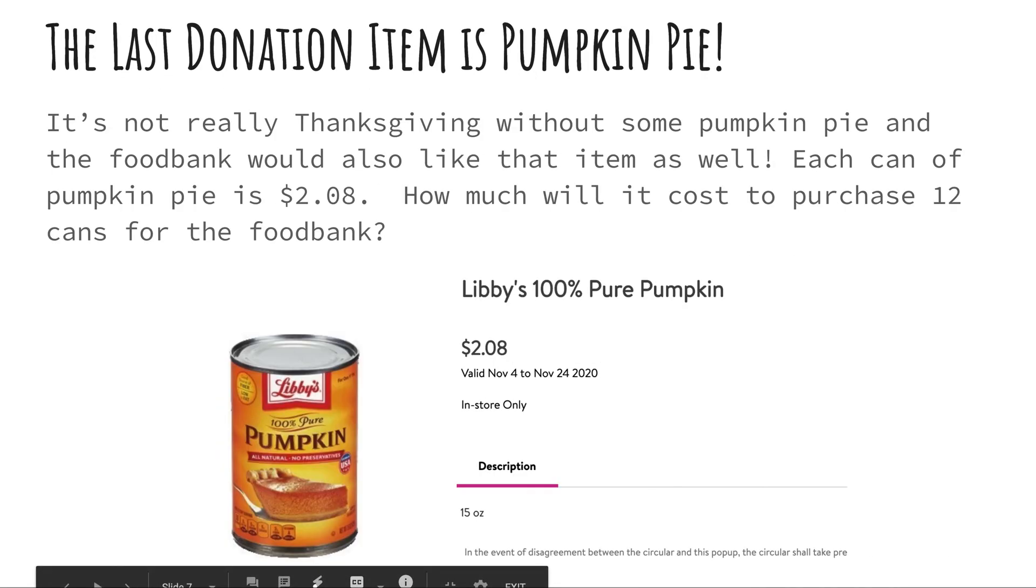All right. Now we're going to move on to our last donation item. And this time it's going to be pumpkin pie. Again, it is not Thanksgiving to me without some pumpkin pie. I love pumpkin pie. Okay, especially with some Cool Whip on top, right? Now notice each can, there's that clue word again, guys, each, multiplication sign, each can of pumpkin pie is $2.08. How much will it cost to purchase 12 cans for the food bank? So again, we're trying to think, okay, what are we going to do? Well, we're going to make sure we do $2.08 times 12. Go ahead and try that now.